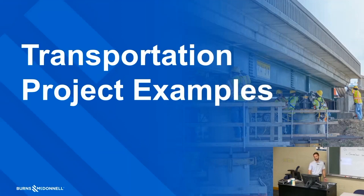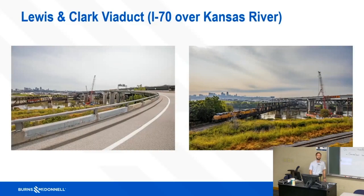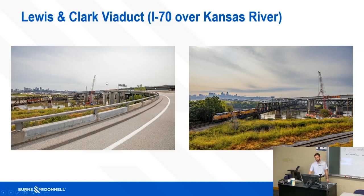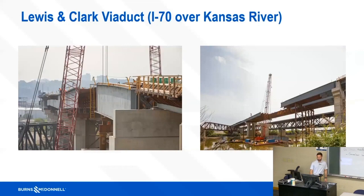The first project example is the Lewis and Clark Viaduct — that's I-70 going west over the Kansas River right before it meets the Missouri River. It's a complex, very long bridge with lots of constraints: there's a railroad going under it, an airport nearby where we had to consider the flight path of incoming airplanes, and you can see different structure types — concrete, steel, and everything in between.